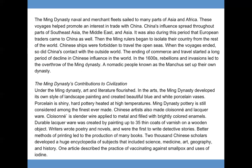Ming Dynasty Contributions to Civilization. Under the Ming Dynasty, art and literature flourished. The Ming developed their own style of landscape painting and created beautiful blue and white porcelain vases — Ming Dynasty pottery is still considered among the finest ever made. Chinese artists also made cloisonné and lacquer ware. Cloisonné uses slender wire applied to metal and filled with brightly colored enamels, while lacquer ware was created by painting up to 35 thin coats of varnish on a wooden object. Writers wrote poetry and novels and were the first to write detective stories. Better printing methods led to the production of many books. Two thousand Chinese scholars developed a huge encyclopedia covering science, medicine, art, geography, and history. One article described the practice of vaccinating against smallpox and uses of iodine.